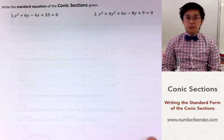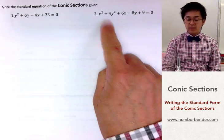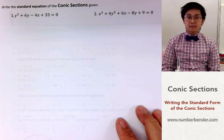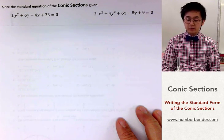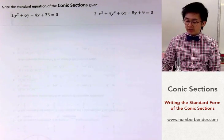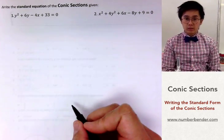Now for problem number 2 we are noticing that the exponent 2 is with both x and y. And when that happens we know that this could either be an ellipse, a circle, or a hyperbola. So let's go ahead and start grouping our variables.